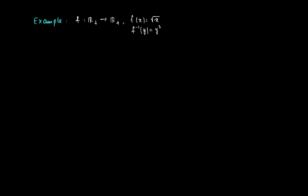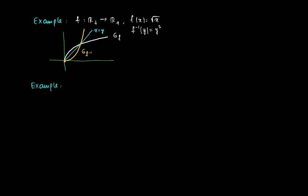For example, look at the function F(x) = √x on ℝ⁺, with inverse F⁻¹(y) = y². The white line gives the graph of F, and by reflecting it in the line x = y, we get the parabola y², which is the graph of the inverse function F⁻¹.